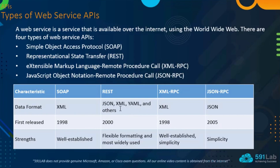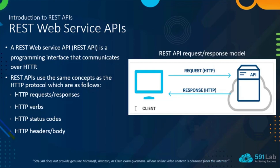REST can use different data formats like JSON, XML, YAML, and others. REST web service API is a programming interface that communicates over HTTP. REST APIs use the same concepts as HTTP protocols: HTTP requests and responses, HTTP verbs, HTTP status codes, and HTTP headers and body. The client requests via HTTP protocols to an API and gets a response back.